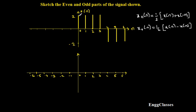Looking at these formulas, I need x(n), which is already given, and I also need x(-n). The very first task is to sketch x(-n), which is nothing but the reflected version of the given signal x(n). Then I need to add those two signals and divide by 2 to get the even part, or subtract and divide by 2 to get the odd part.